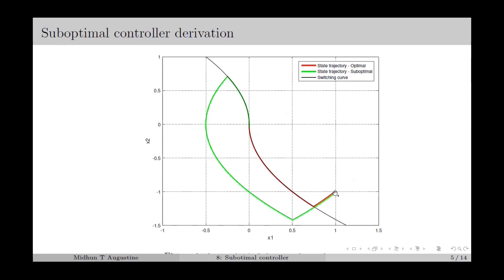Here we consider the initial state as (1, -1) and the desired terminal state as (0, 0), the origin. The red curve shows the time optimal trajectory where we can reach from the initial state to the desired state in only one switching — with control input minus 1 for the first period and plus 1 for the second. Any other trajectory can be considered suboptimal. The green curve shows a suboptimal state trajectory reaching the origin in two switchings, corresponding to the control law in equation number 4. In the case of suboptimal SMC, we modify this control law to achieve sliding mode behavior.